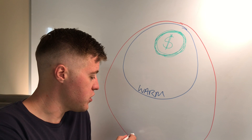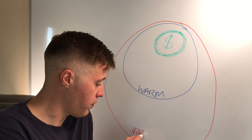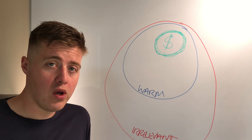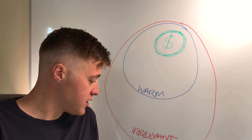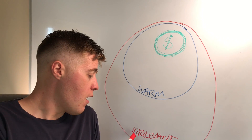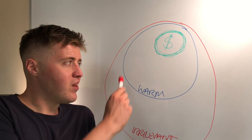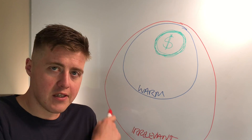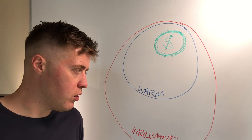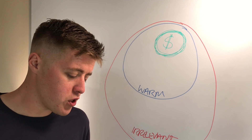Of course there is a third concentric circle — the irrelevant audience. These are people that will never buy from you. This is the majority of people in reality, unless you're McDonald's or Coca-Cola. But you can put multiple different layers into these concentric circles — people who aren't ready yet, who know they have a problem but aren't aware of you, etc. For the purpose of this exercise we're just concentrating on these three.